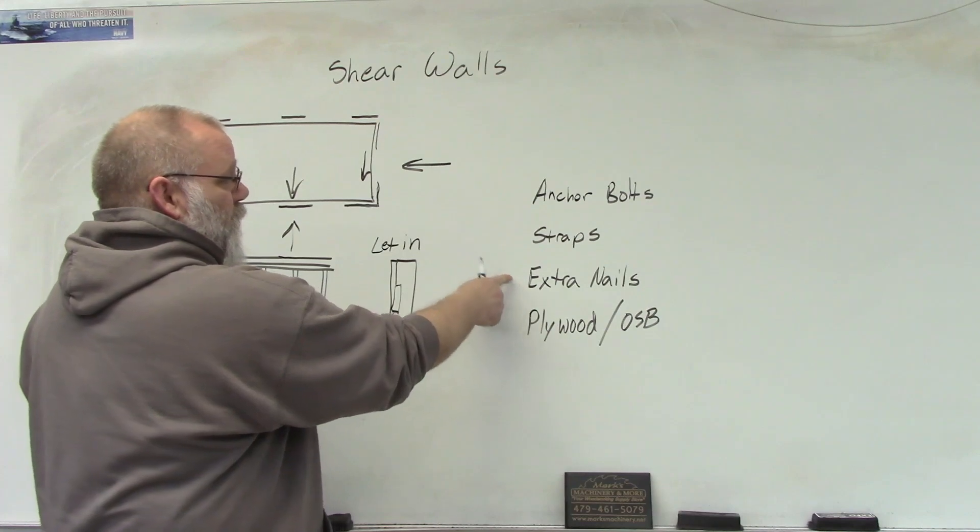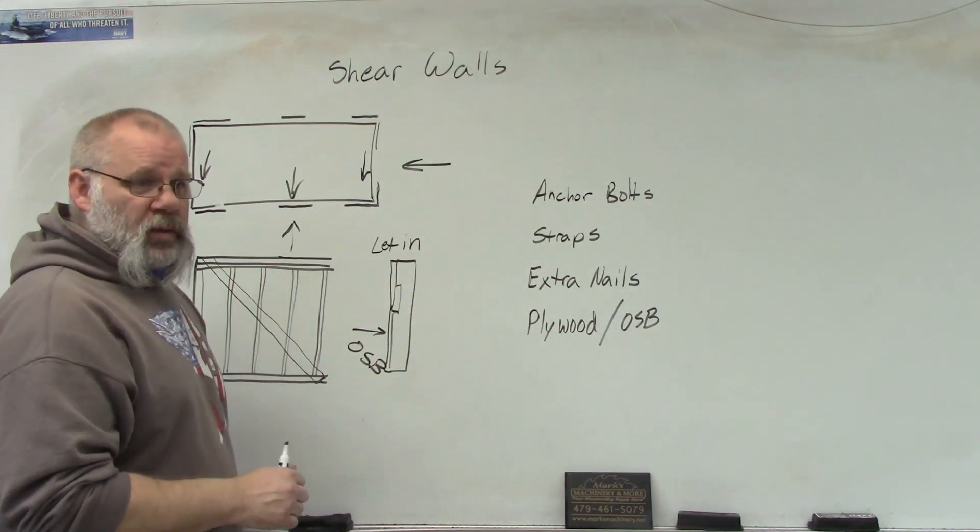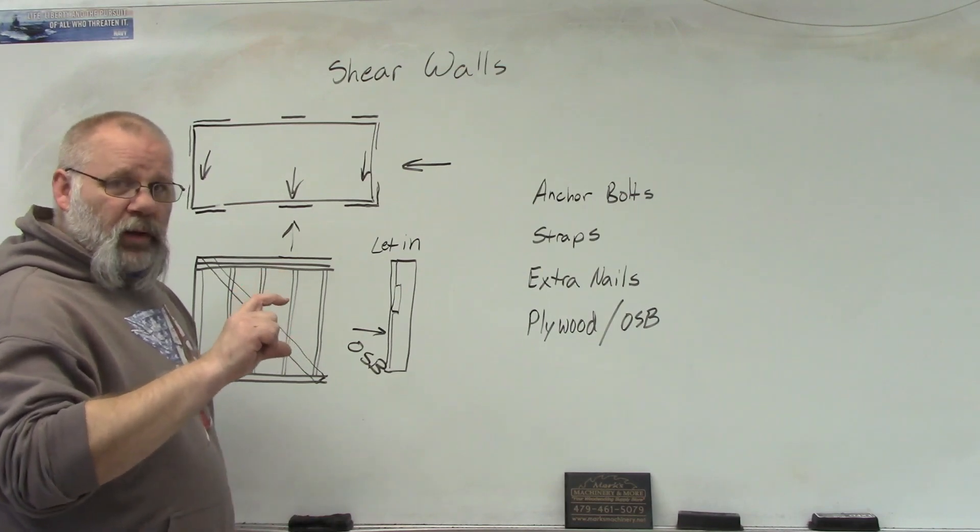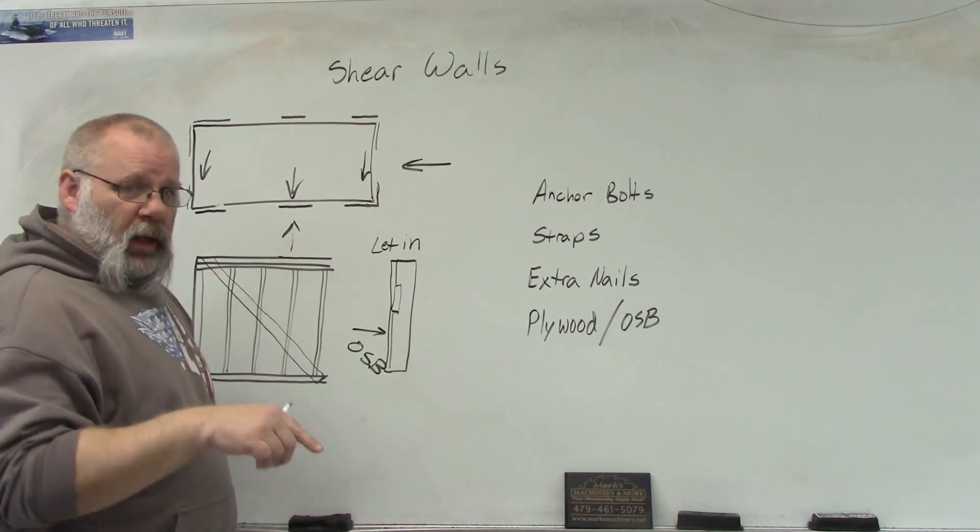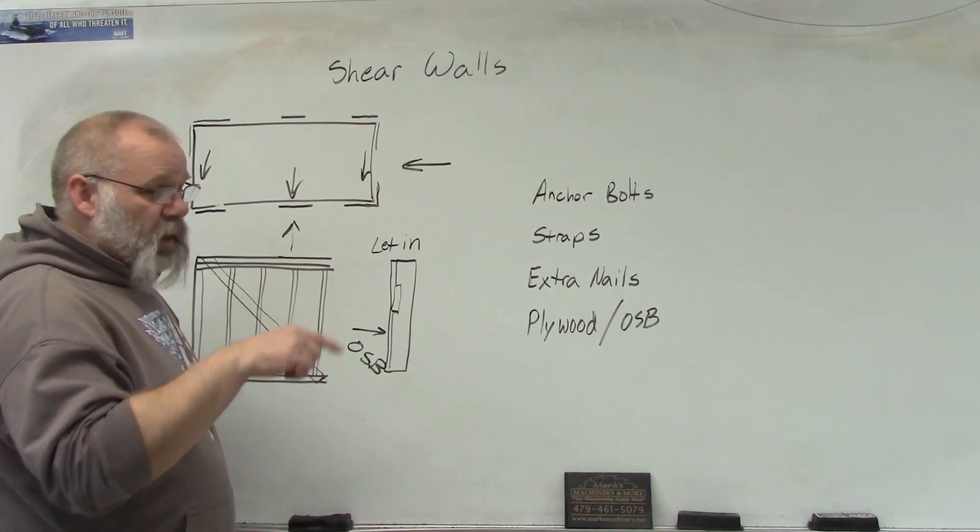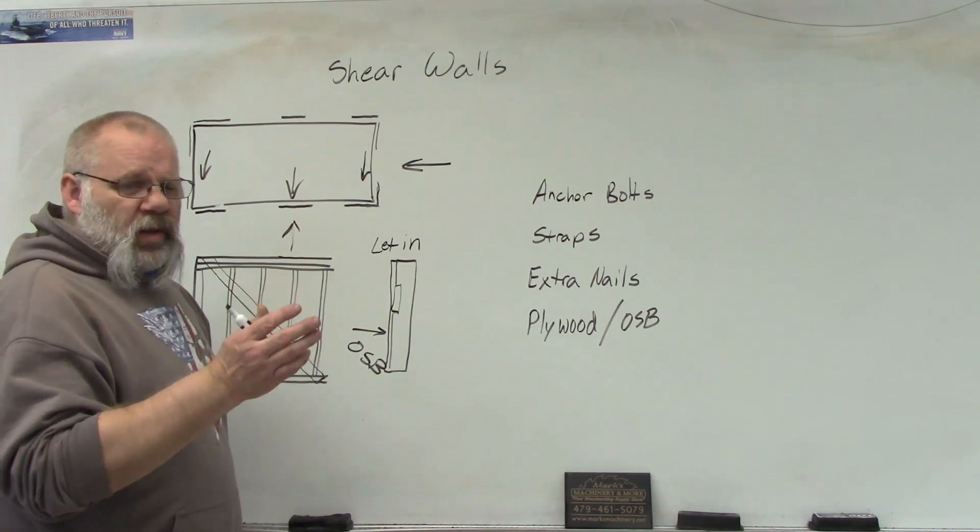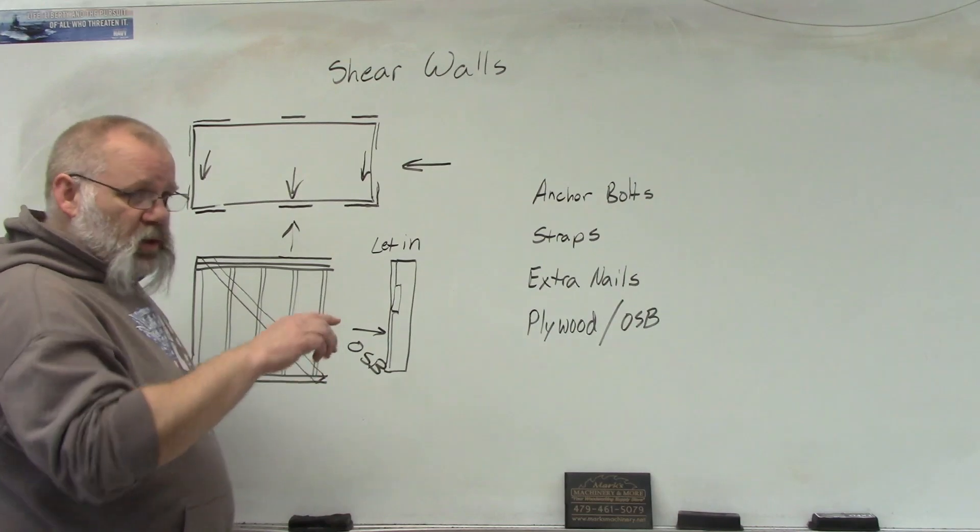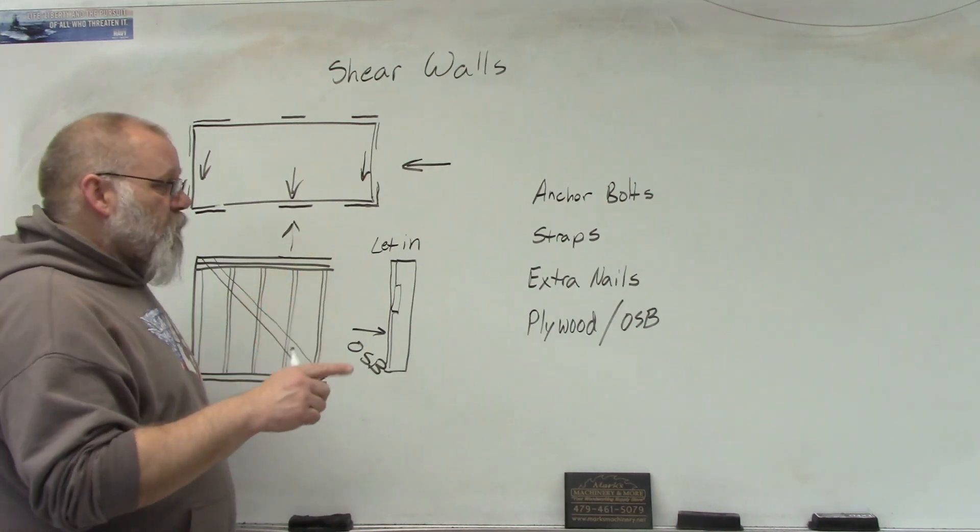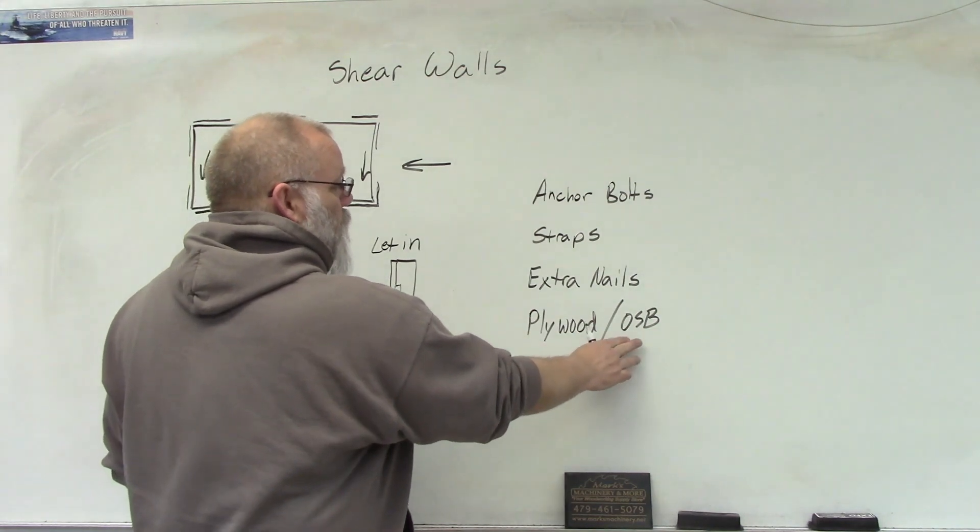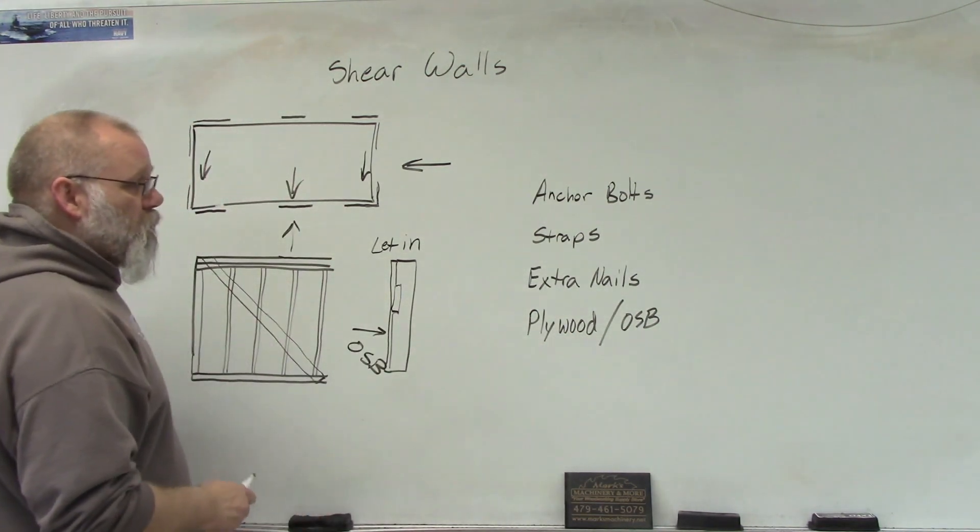Some cases, all they say is you're going to go with extra nails. Instead of having your nails six to eight inches apart, maybe you're having your nails three inches apart along the edge of the field or edge of the sheet of plywood, then the field would just be the same, it'd be 10 to 12 inches. So it's just around the edges where you'd get all the extra nails. And you can use either plywood or OSB.